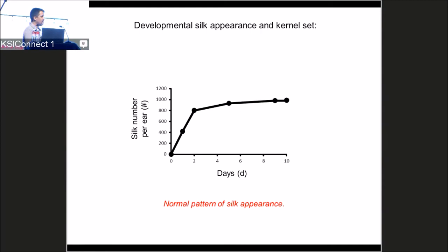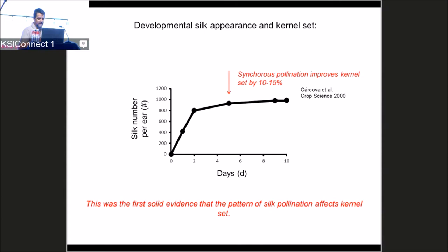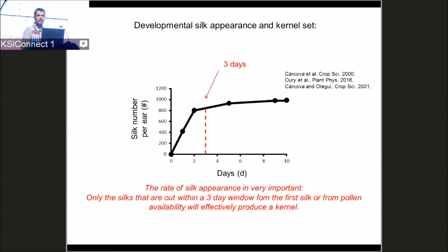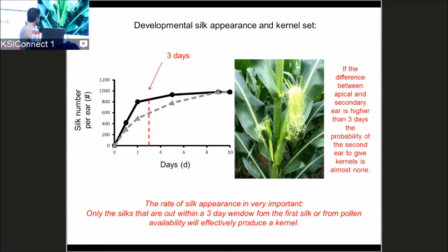There is a concept relating to how many silks are out within three days — silks appearing in that window will surely give a kernel, while silks coming out later are mostly going to abort. An ear with more late silk appearances will have more aborted structures, and the capacity of those late-appearing silks to set kernels is very low. This applies not only within an ear but also between first and second ears: if the second ear doesn't reach silking within three days of the first, its chance of producing kernels is very low.